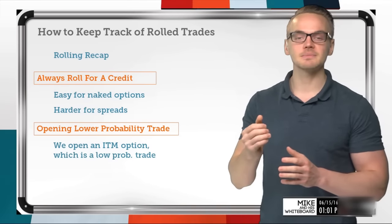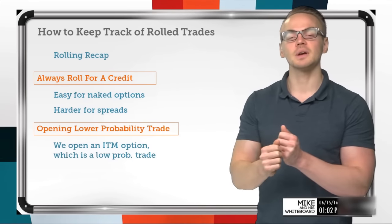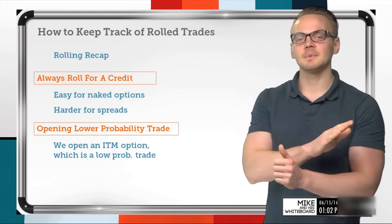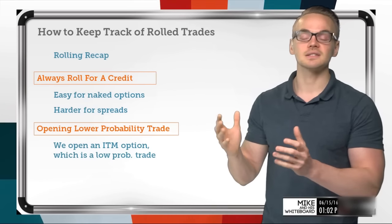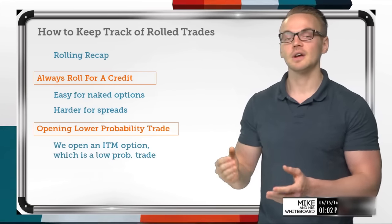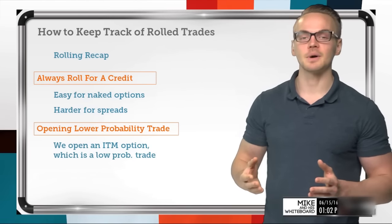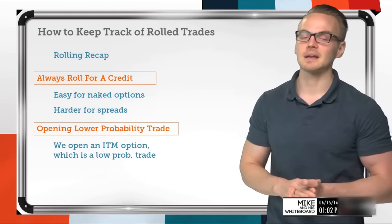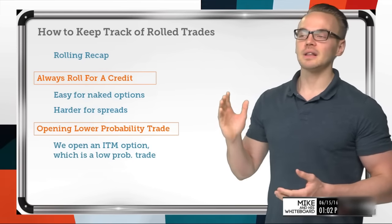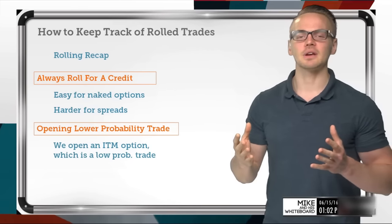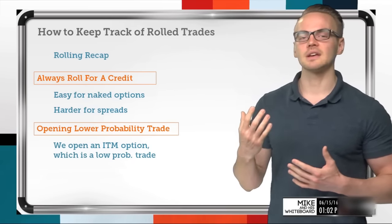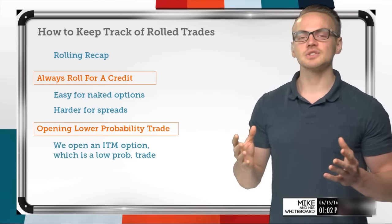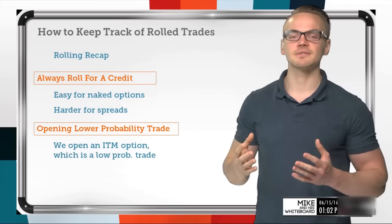If I'm closing my in-the-money option and opening a new in-the-money option, I'm basically selling an in-the-money option, which means I need the stock price to actually move in my favor for that option to become out of the money. So it's going to be a lower probability trade — it's really important to keep that in mind as we're rolling. Let's get into an example with a short put and walk through exactly how we keep the extrinsic value in mind.